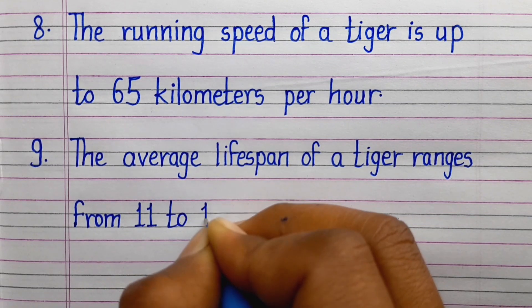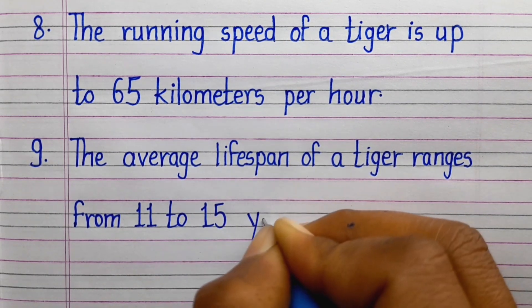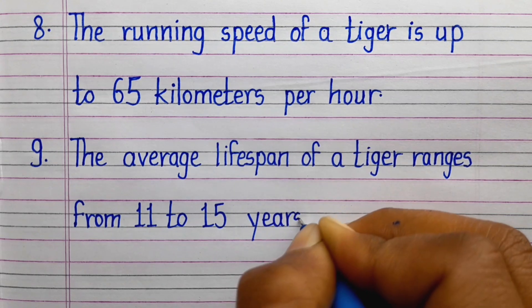Ninth line: The average lifespan of a tiger ranges from 11 to 15 years.